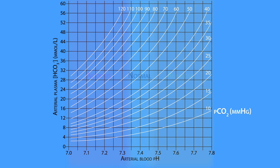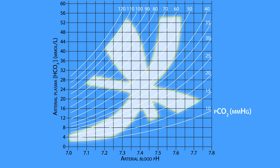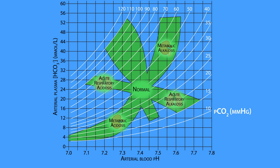The most valuable part of the Davenport diagram are the six quadrants, which allow us to characterize the type of acid-base disorder given the pH, PCO2, and bicarbonate concentration. These six quadrants are referred to as metabolic acidosis or alkalosis, acute respiratory acidosis or alkalosis, and chronic respiratory acidosis or alkalosis.